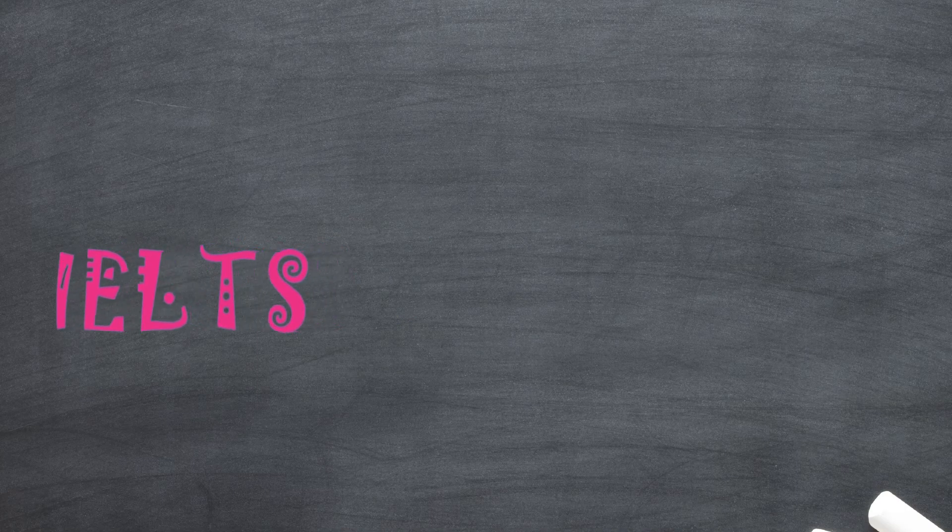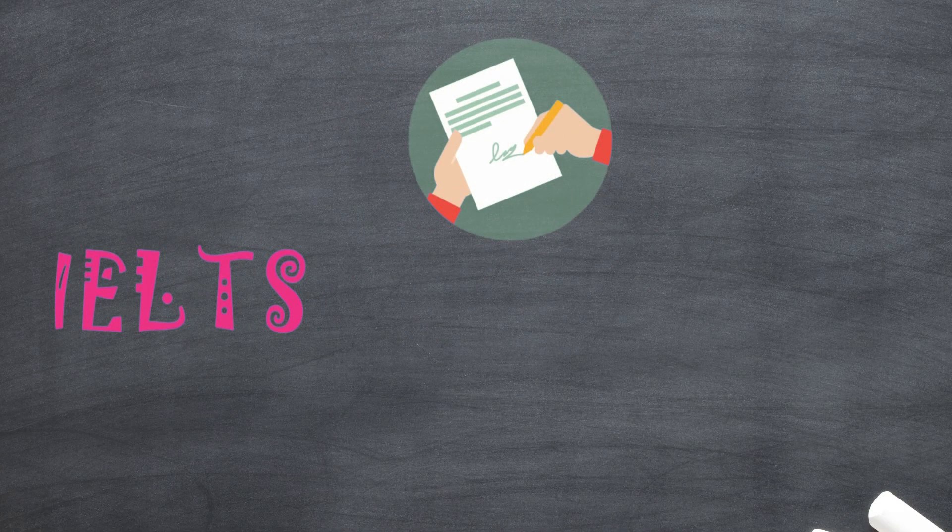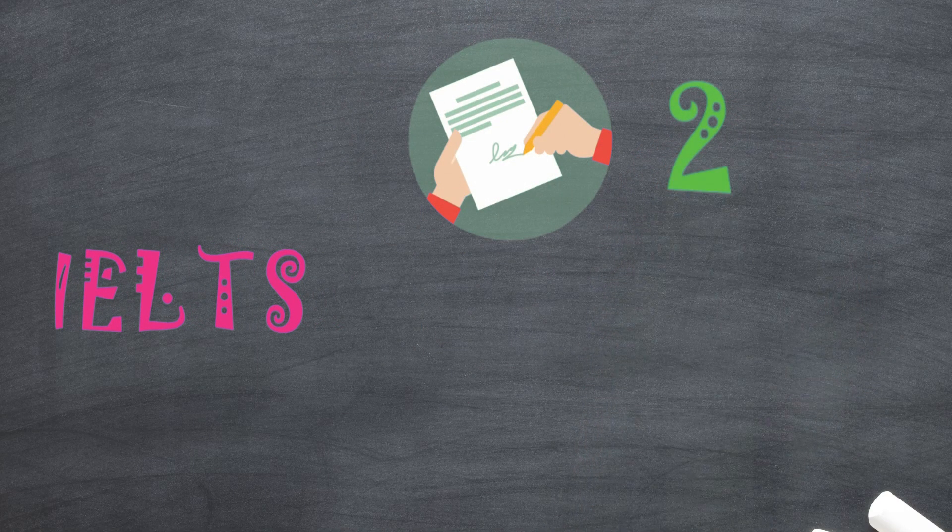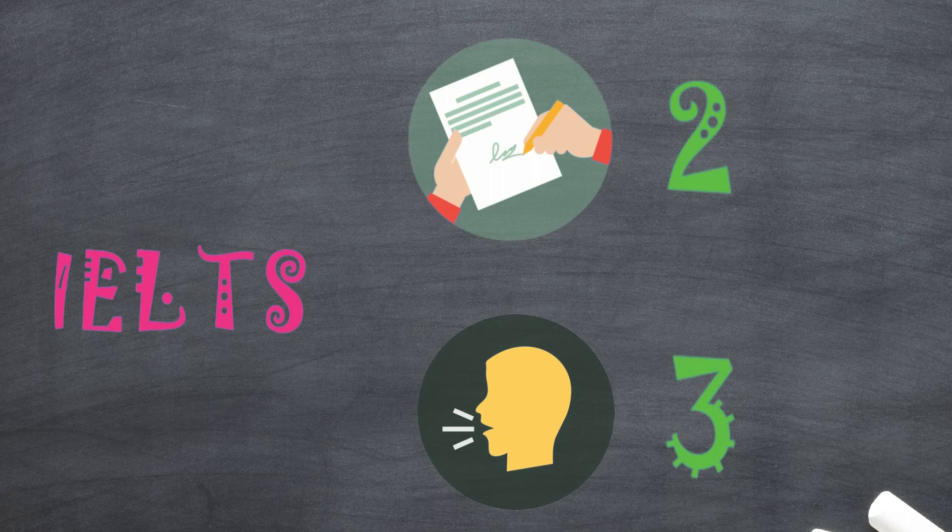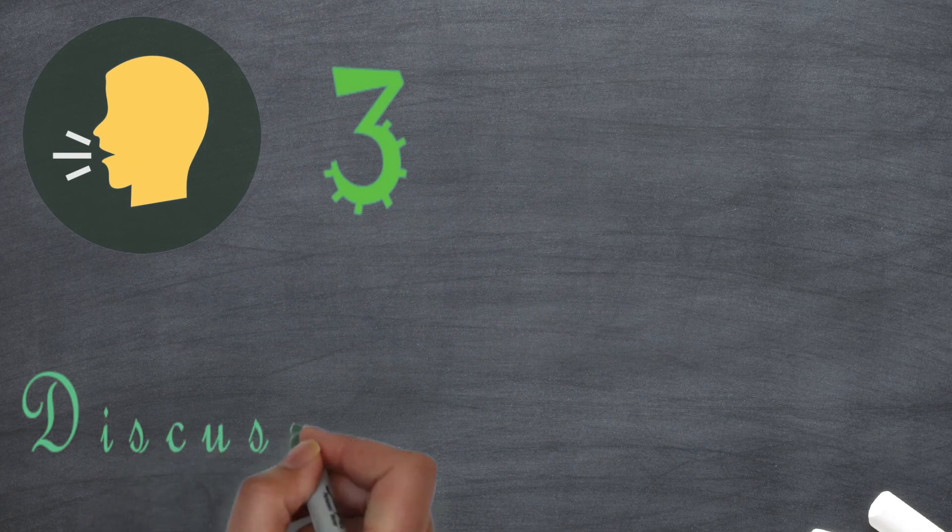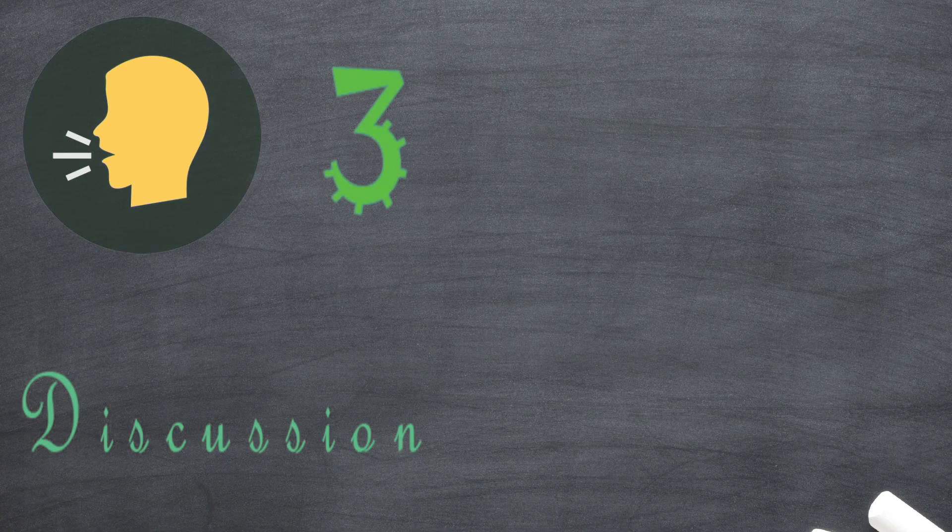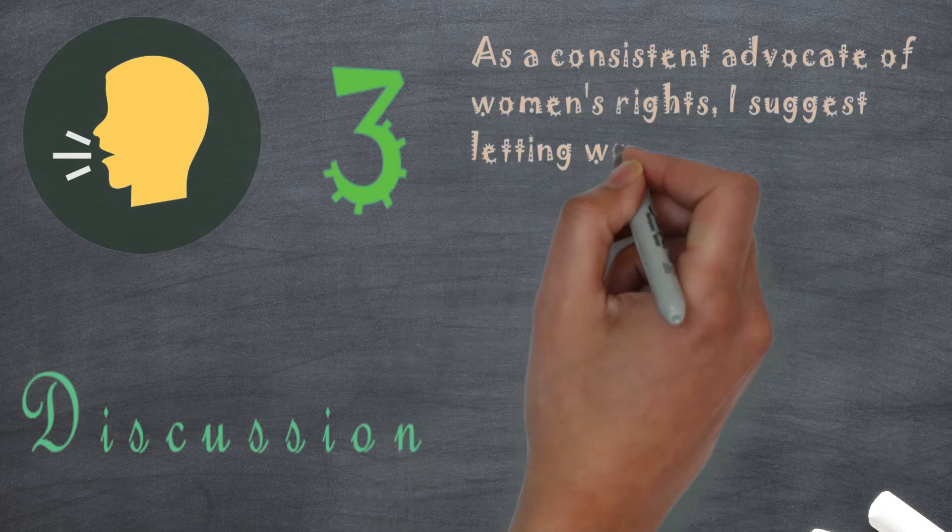Now, using it in IELTS writing task 2 and speaking part 3 is of great potential. Now, let's have a look at the speaking first. How can I use advocate in IELTS speaking? Remember, in IELTS speaking, we have to discuss something, right? And in order to express an idea, we have to have some kind of signal. Besides I think and I believe, obviously everybody knows about that. We can say, as a consistent advocate of women's rights, I suggest letting women do whatever they feel pleased.